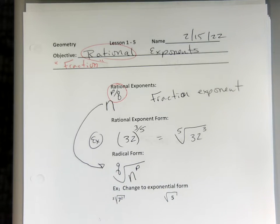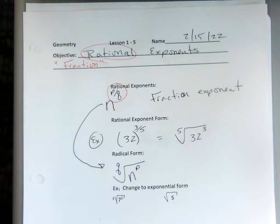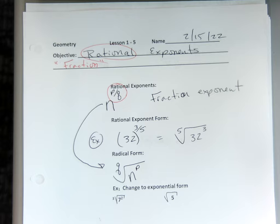So let's go back. I have the 5th root of 32. What's the 5th root of 32? It is 2.